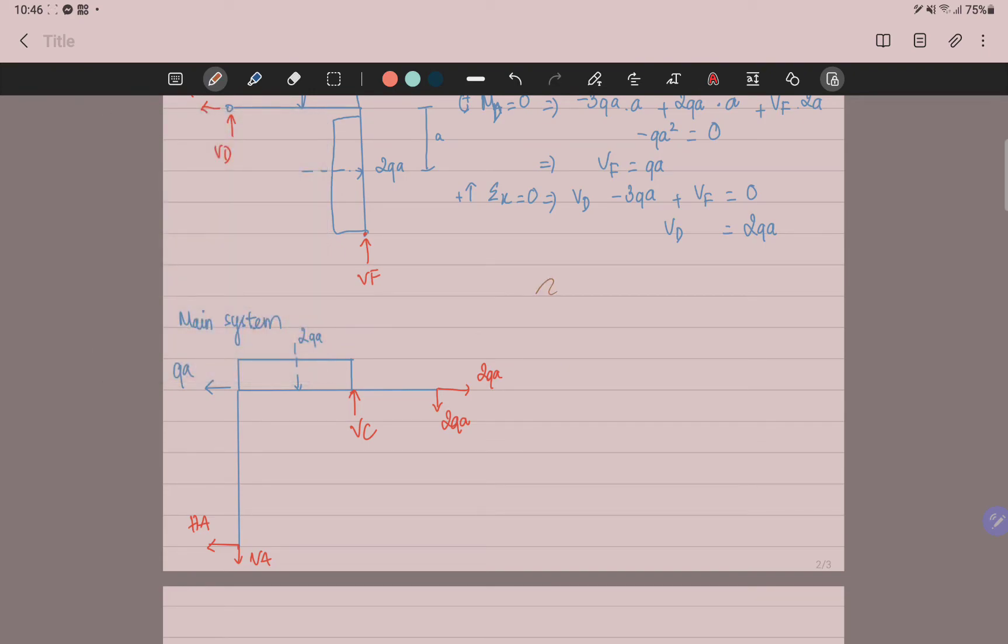First, you sum the forces in the y direction, and you choose this direction as positive. You have minus HA minus QA, because HA and QA are opposite the direction you already chose, plus 2QA equals zero. So HA equals QA.